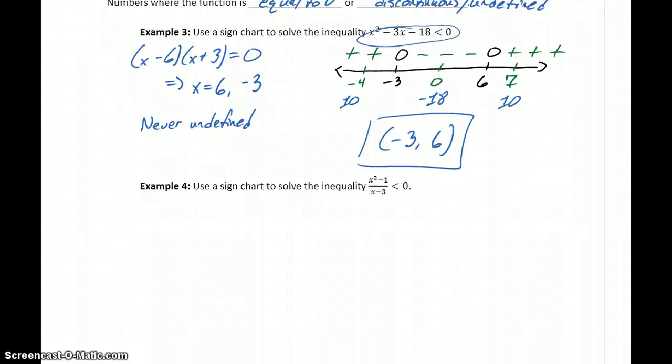In our last example, we'll start off similarly. We'll look at where this function is equal to 0. So we can factor this as (x - 1)(x + 1) over (x - 3), using the difference of squares. Setting that equal to 0, we really only have to worry about the numerator. So that's going to give us values of x equals 1 and negative 1 to consider.